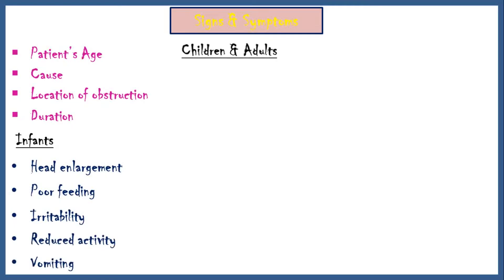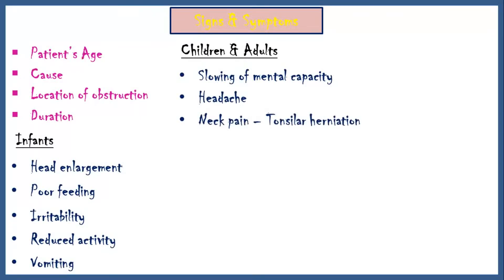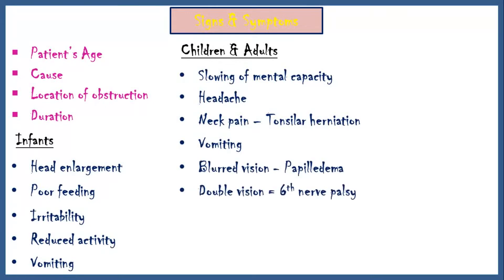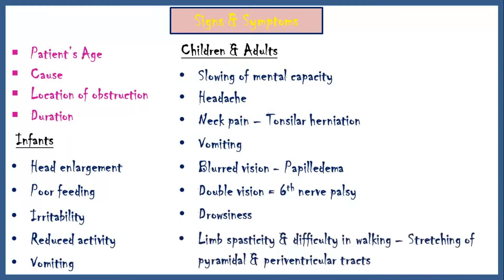In children and adults, symptoms include slowing of mental capacity, headache, neck pain suggesting tonsillar herniation, vomiting, blurred vision due to papilledema, double vision due to sixth nerve palsy, drowsiness, and limb spasticity and difficulty in walking due to stretching of pyramidal and periventricular tracts.